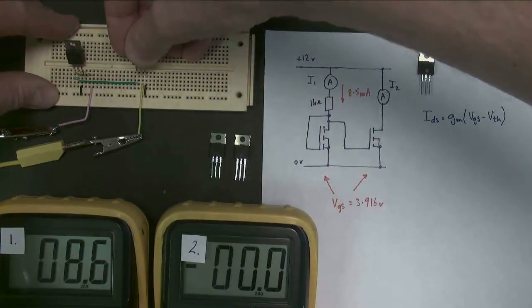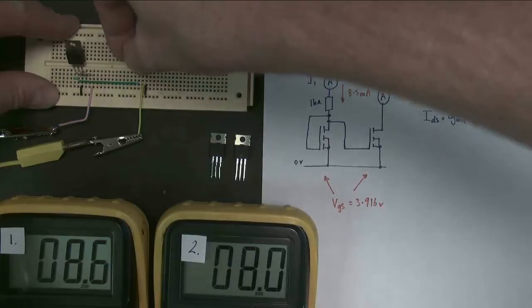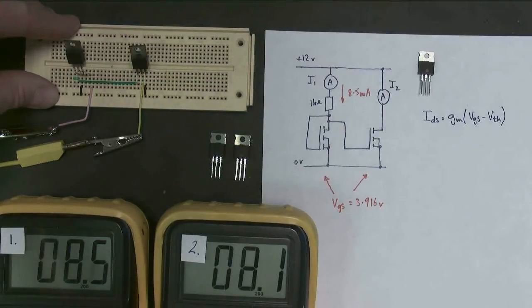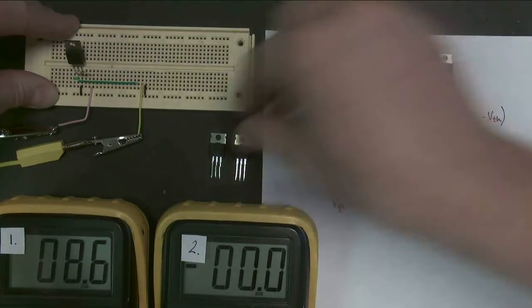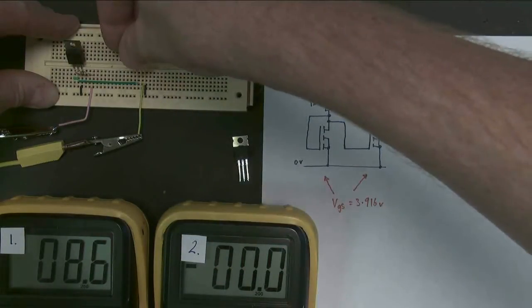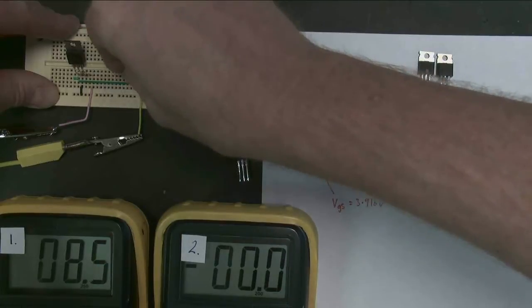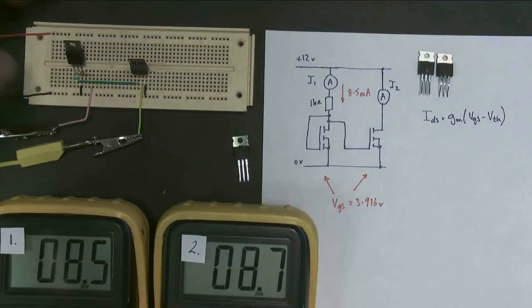And the only way you can make the MOSFETs identical is manufacturing them to be so, normally by etching them onto the same piece of silicon. Here's another one just to see if it was a fluke. Oh it's getting better, 8.1, it's pretty good. Yay, we'll stop there. Pretty good, 8.7.